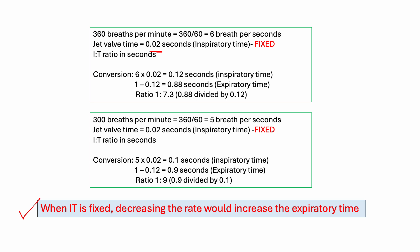Here is the calculation. At 360 breaths per minute, divide by 60 to get 6 breaths per second. The inspiratory time is 0.2 seconds. You subtract from 1 second to get the expiratory time, and then divide inspiratory time by expiratory time to get the I:E ratio.